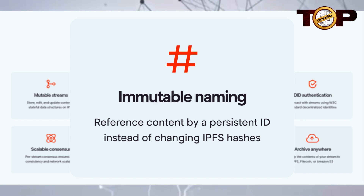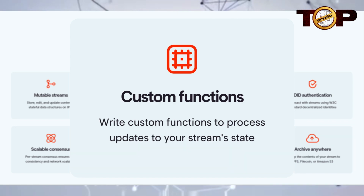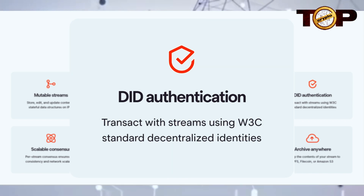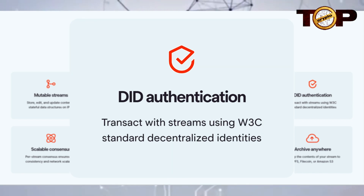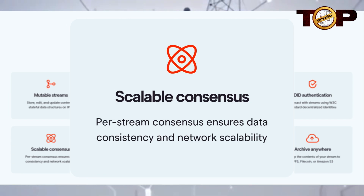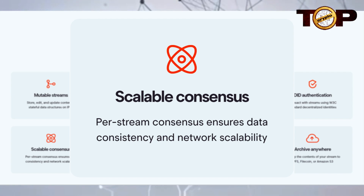Immutable naming lets you reference content by a persistent ID instead of changing IPFS hashes. You can also write custom functions to process updates to your stream state, and transact with streams using W3C standard decentralized identities. Per-stream consensus ensures data consistency and network scalability.